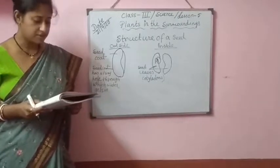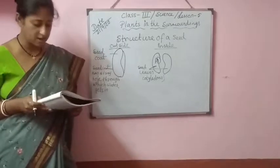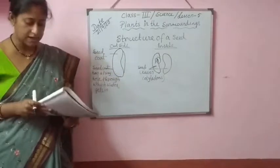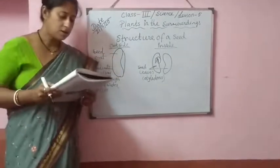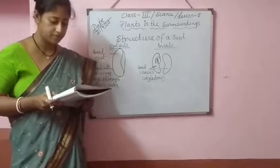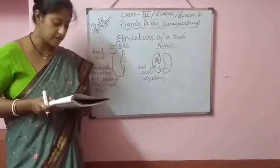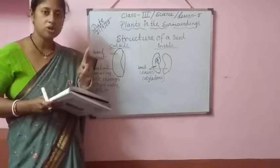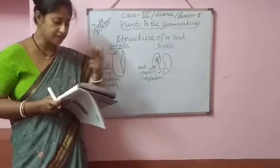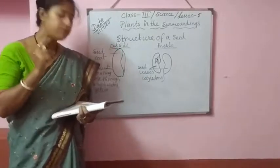Kinds of seeds. There are two kinds of seeds based on the number of cotyledons — monocot seed and dicot seed. Monocot seeds contain only a single cotyledon inside them. Examples of monocot seeds are corn, wheat, and rice.